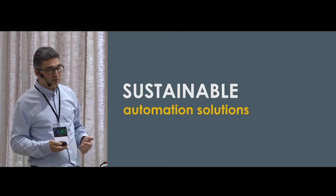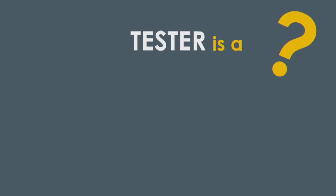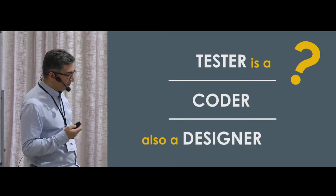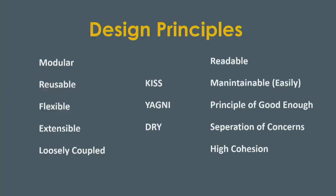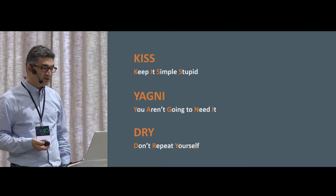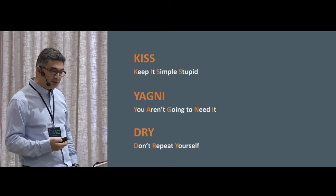Our second trait is design. As a tester, we are a coder and also a designer, so we should know the design principles. Our test automation architecture is better to be modular, reusable, flexible, extensible, loosely coupled, readable, and maintainable. When we look at the principles, these are very simple but also very valid principles.